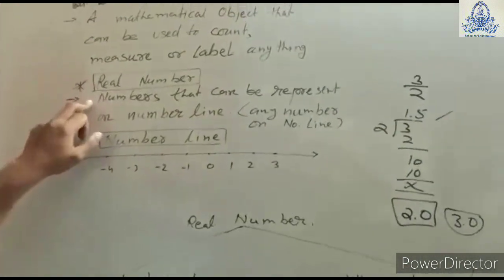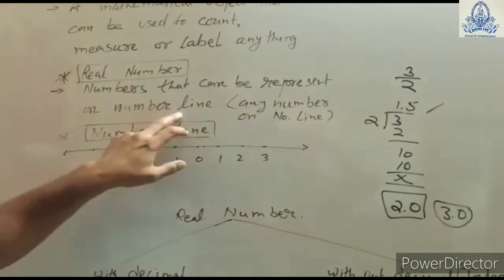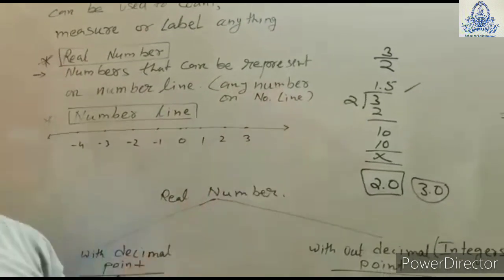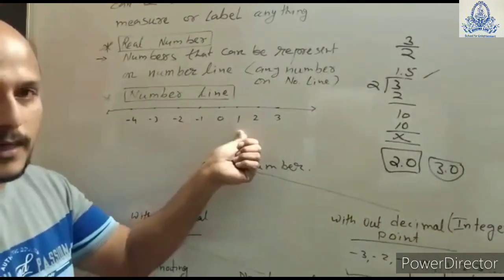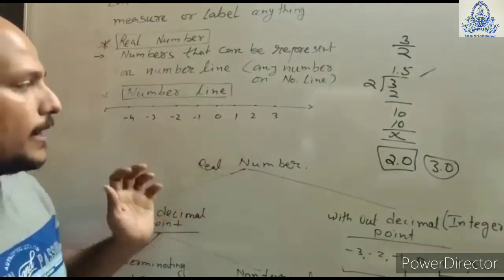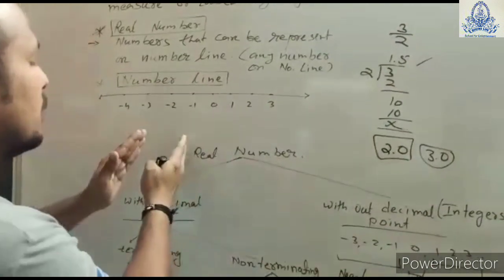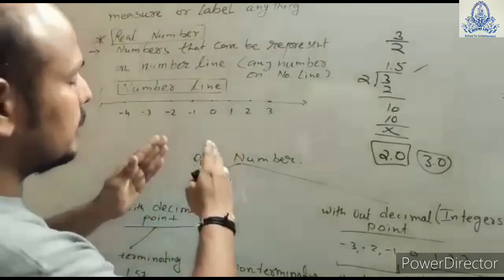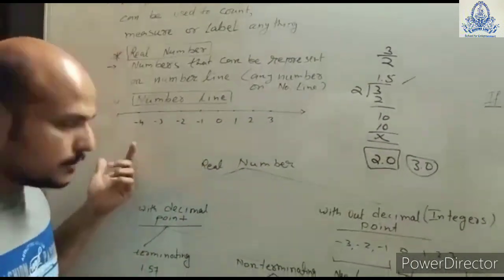Now, what is a real number? A real number can be represented on the number line — or you can say any number on the number line is a real number. The number line has 0 in the middle, positive numbers 1, 2, 3 on the right-hand side, and negative numbers -1, -2, -3 on the left-hand side.